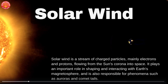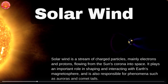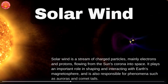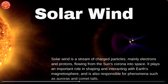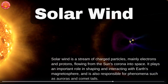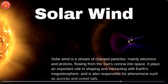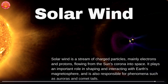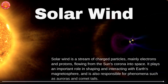One more concept we need to go through is solar wind. Solar wind is a stream of charged particles, mainly electrons and protons, flowing from the sun's corona into space. It plays an important role in shaping and interacting with Earth's magnetosphere and is also responsible for phenomena such as auroras and comet tails.